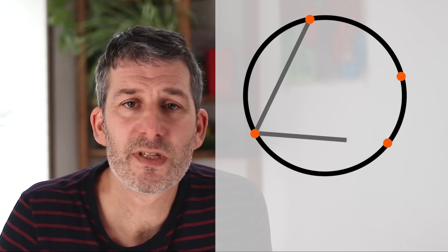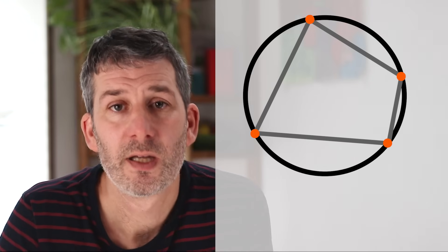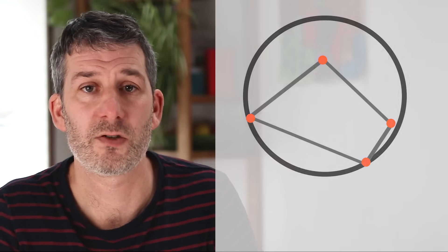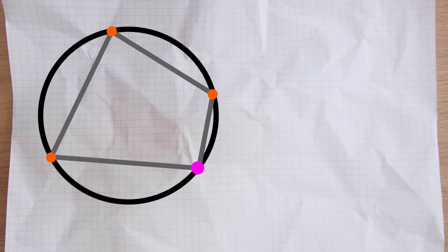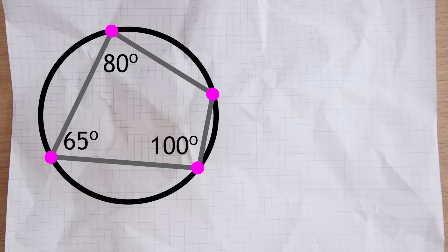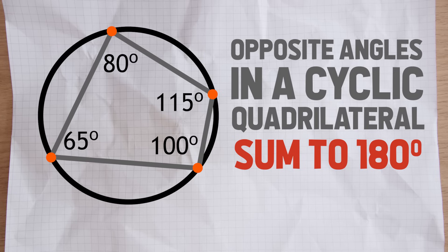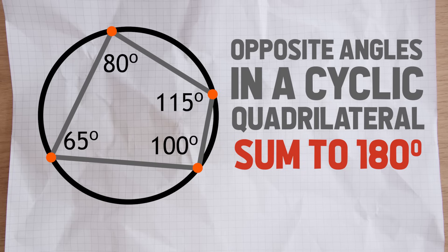Theorem number four: you can see on the diagram a four-sided shape - a quadrilateral - where each vertex or corner is touching the circle. That makes it what we call a cyclic quadrilateral. If not all of its vertices are touching the circle, it's not a cyclic quadrilateral. Cyclic quadrilaterals must have all vertices touching the circumference of the circle. The rule is that the opposite angles will always add up to 180 degrees. So if one angle is 80 degrees then the opposite must be 100 degrees, and if one is 65 degrees the other must be 115 degrees. That's our fourth theorem: opposite angles in a cyclic quadrilateral sum to 180 degrees. Pause the video, have a go at the questions and I'll be back in just a moment.